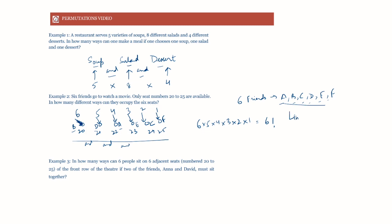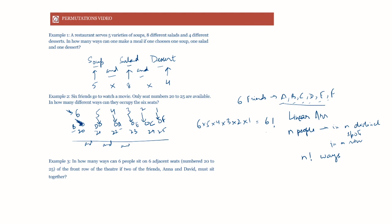This brings us to what we call linear arrangements. If we place n people in n distinct spots in a row, we can do it in n! ways. Here we had to place six people in six spots, and that is why the number of ways is 6!.